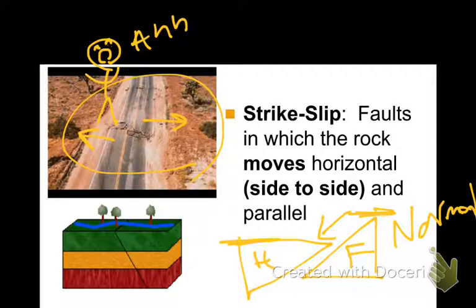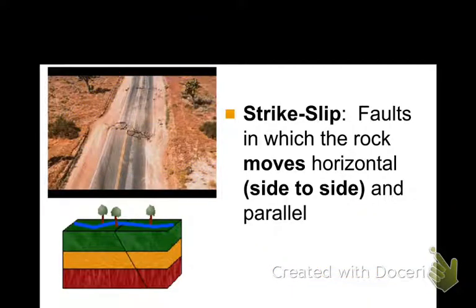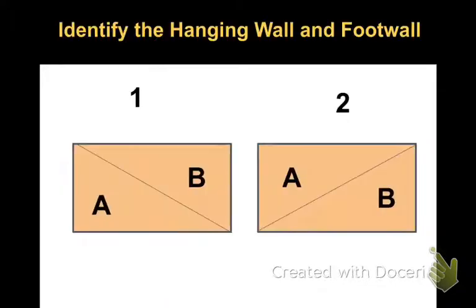I'm sure you have it all written down — that's a lot to take in, but I promise it's not going to be as bad as you're thinking. We'll do one more practice identifying the hanging wall and foot wall. Don't say it out loud — just think quietly in your head: what's the hanging wall for number one, and what's the hanging wall for number two?